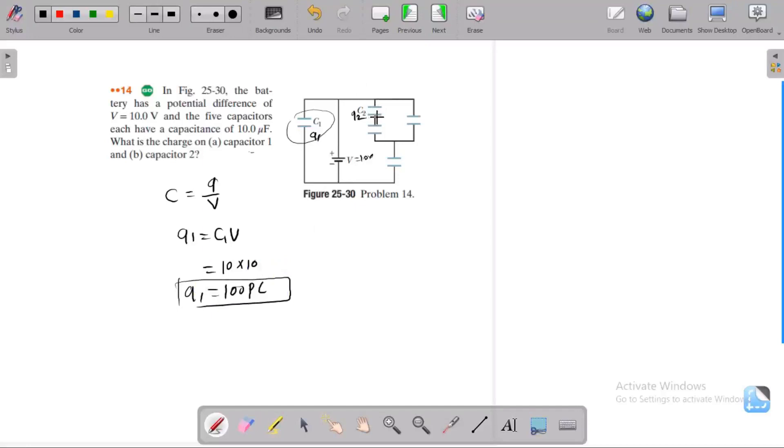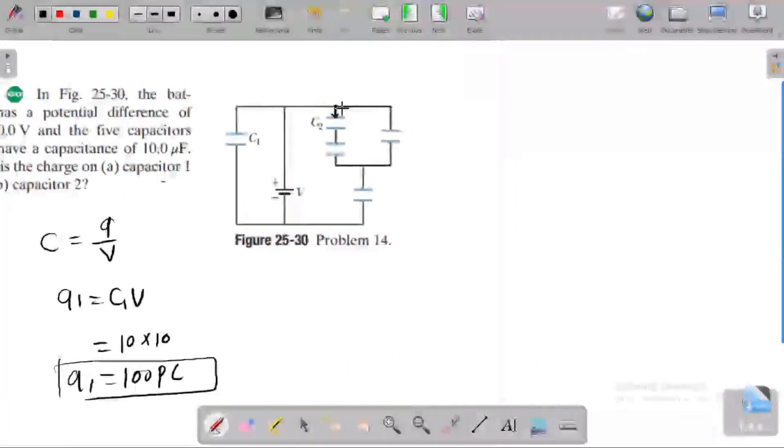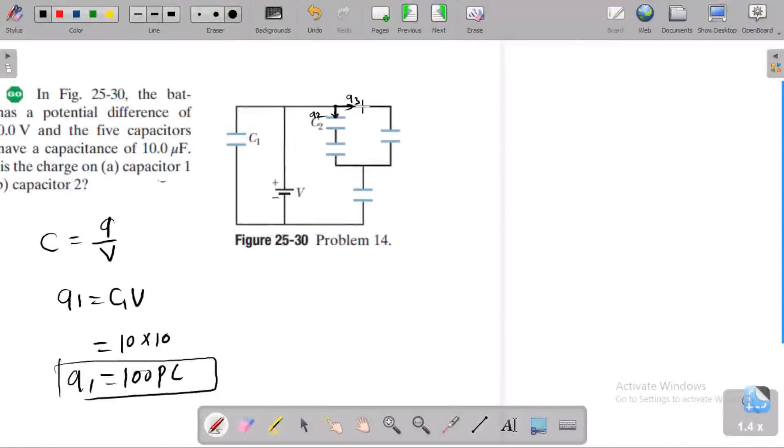But we cannot find out the Q2 value directly because there is a combination. The charge moves in a junction, so for Q2, we need to find out the charge at the junction. If you work on Q2, we can simplify the circuit.